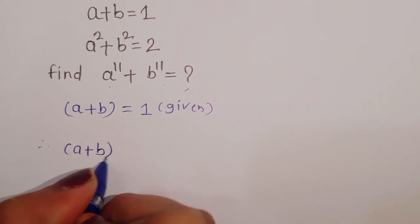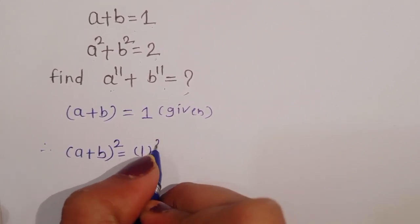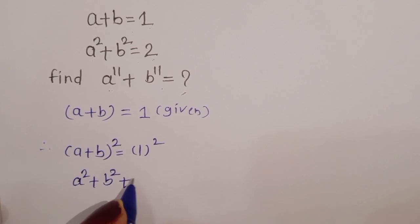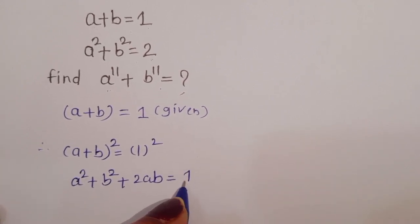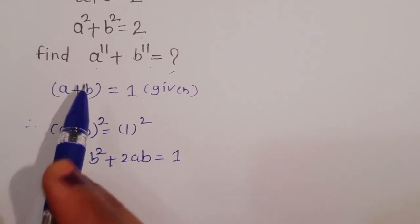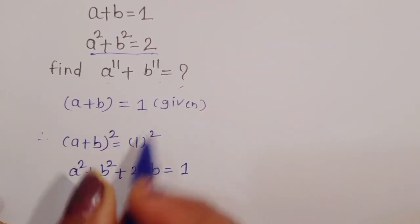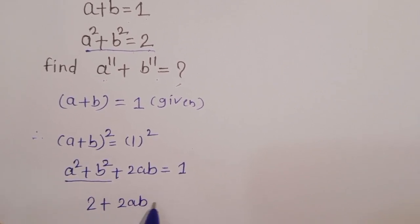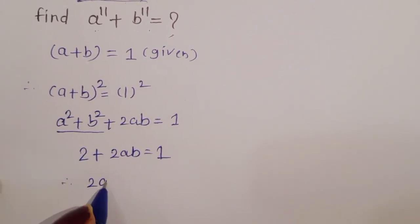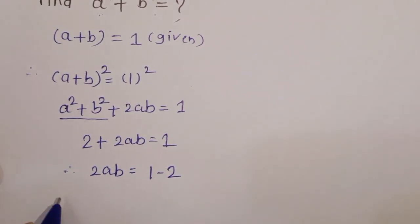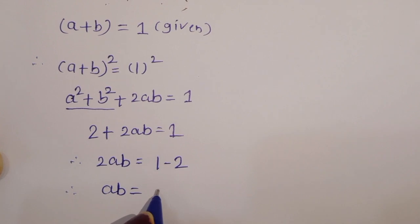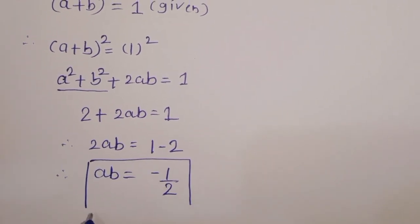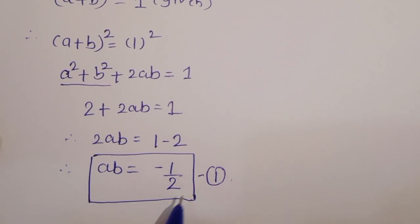We can square both sides: a plus b whole square is equal to 1 squared. That gives a squared plus b squared plus 2ab is equal to 1. We know that a squared plus b squared is equal to 2 (given), so 2 plus 2ab equals 1, therefore 2ab equals minus 1, so ab is equal to minus 1 upon 2. This is Equation 1.